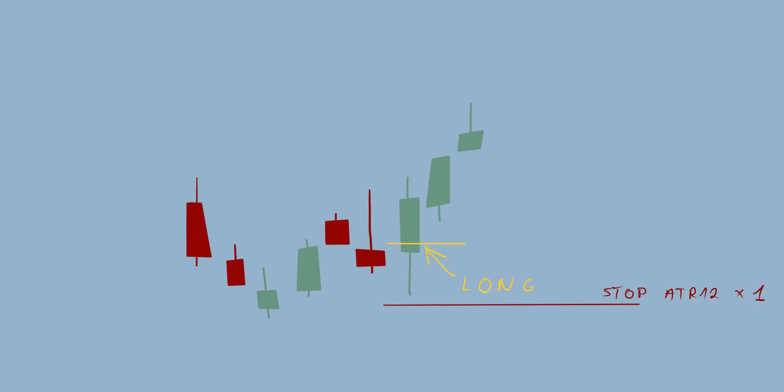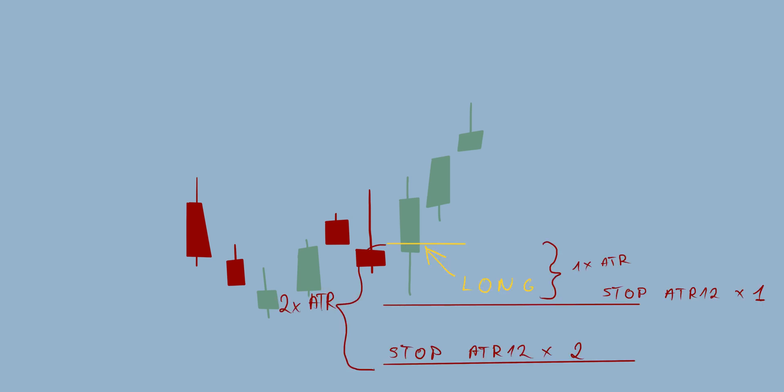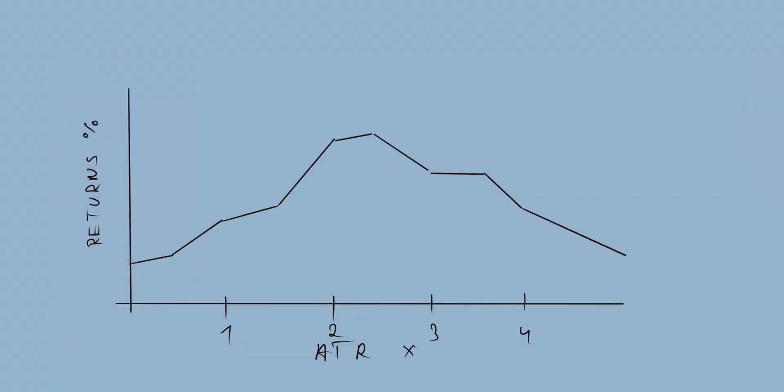Now that we know what strategy optimization is, let's talk about why optimizing your strategy works and why it's better to optimize than not to optimize. Let's take the same stop example from before. Imagine we want to optimize a strategy that uses a multiple of ATR 12 for the stop size, and we want to optimize the number of ATRs used. What this looks like is you plot the backtest performance for different ATR multiple values on a chart. This chart ends up looking something like this — note the peak here. This is the ATR multiple value that yielded the backtest with the best returns.